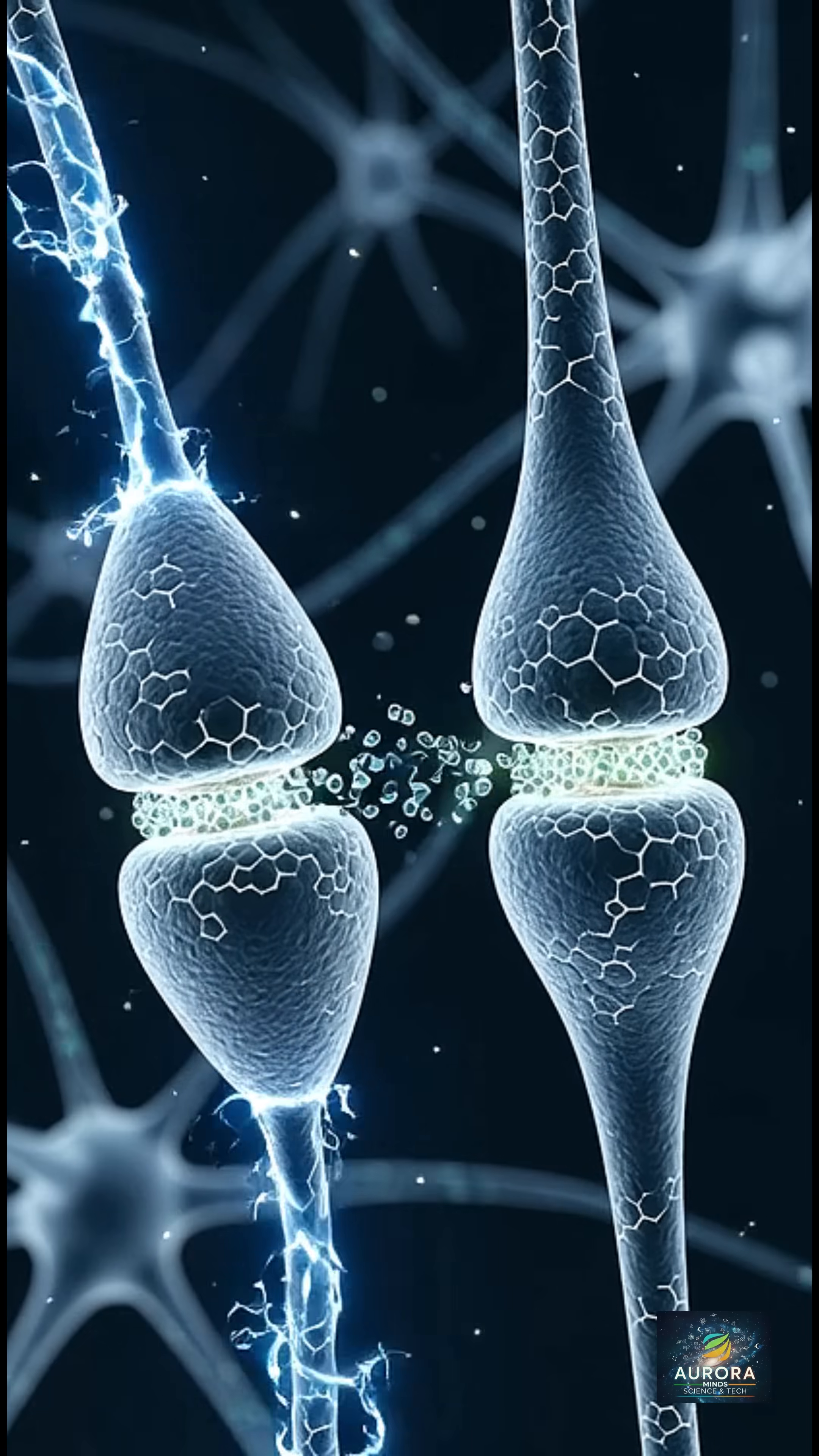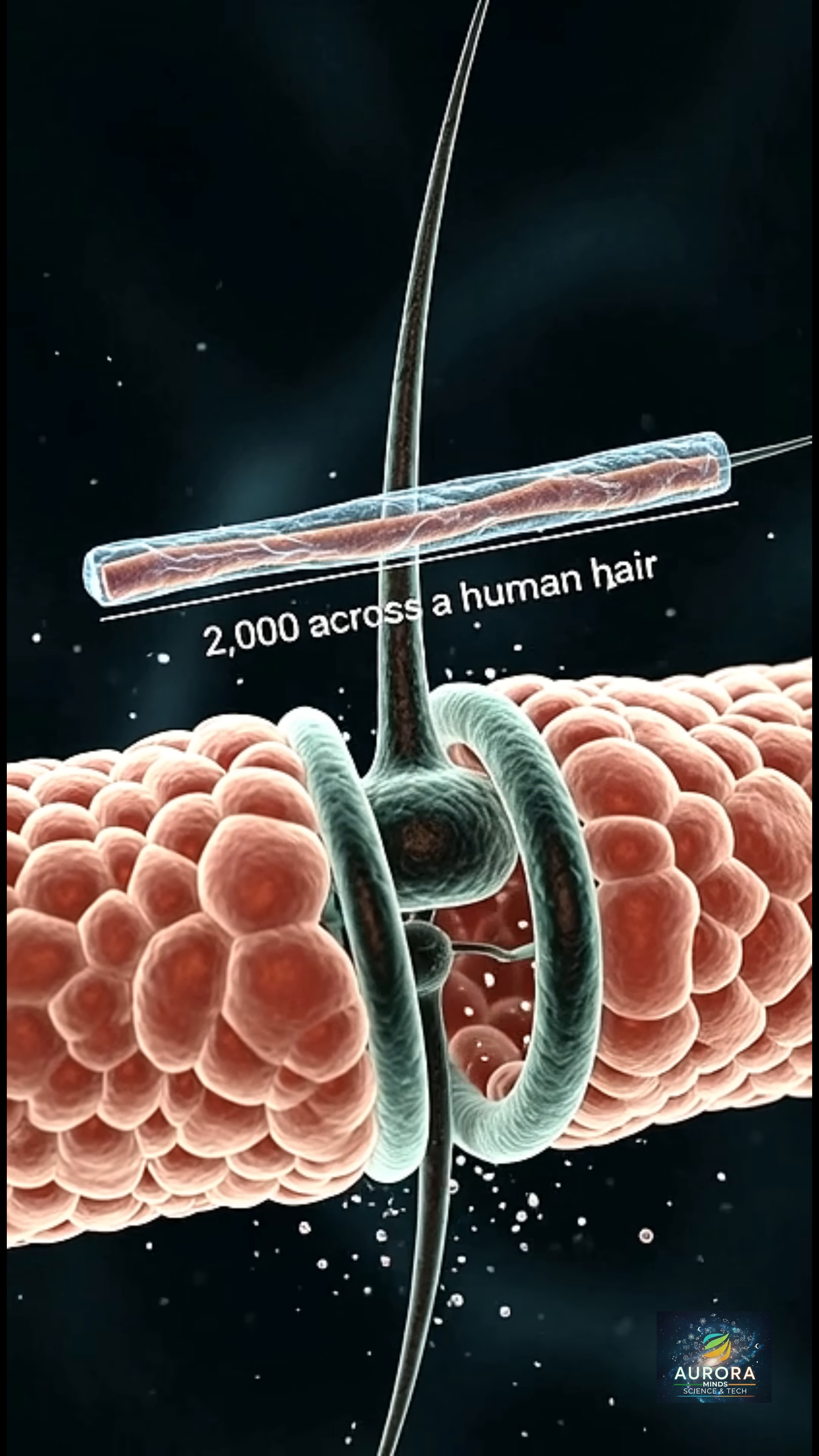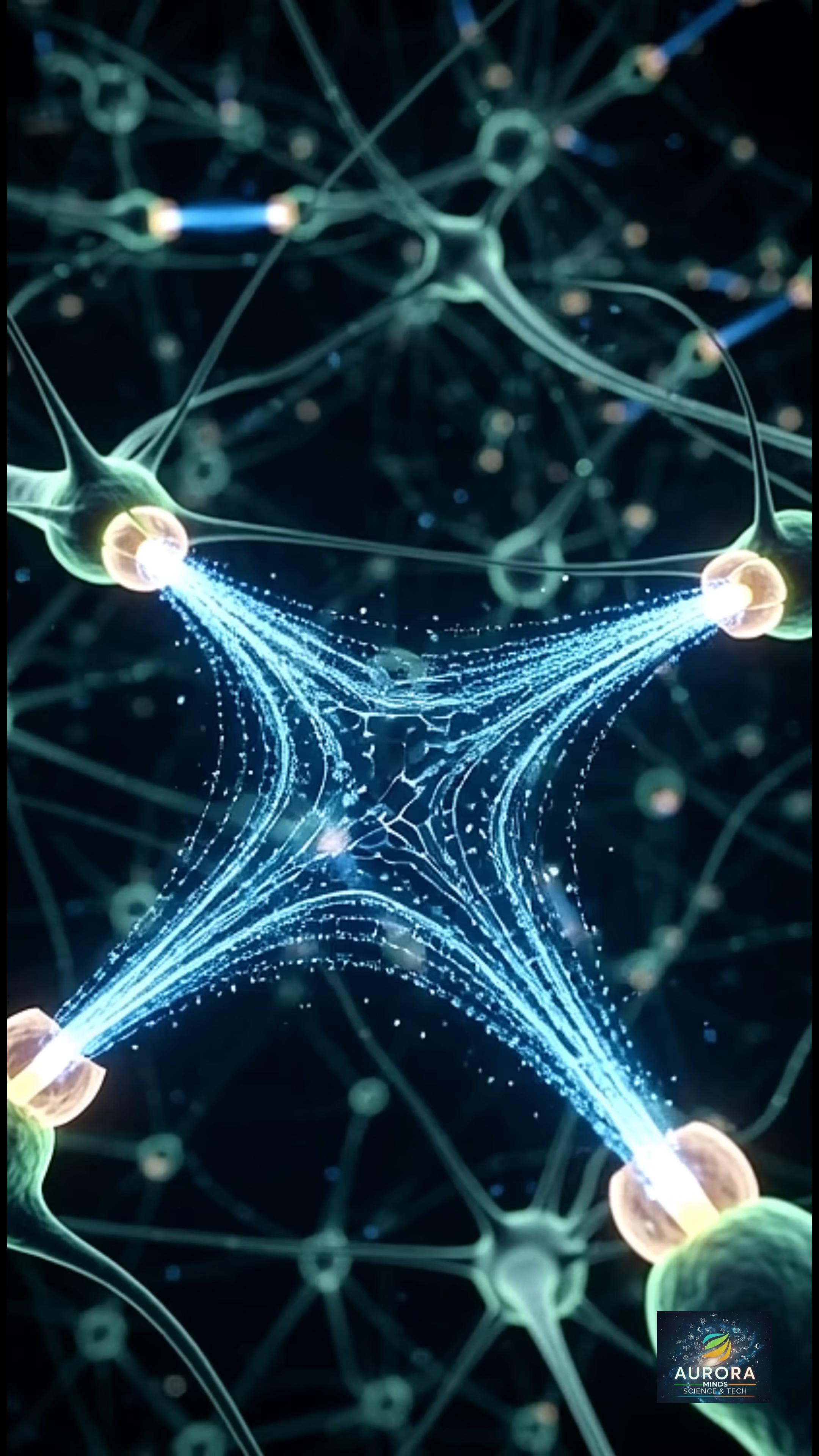But neurons don't touch. What happens next is a chemical handshake at a tiny junction called a synapse, so small you could fit 2,000 across a human hair. Why is this chemical step vital? It allows neurons to talk across this gap, letting your brain process complex decisions.